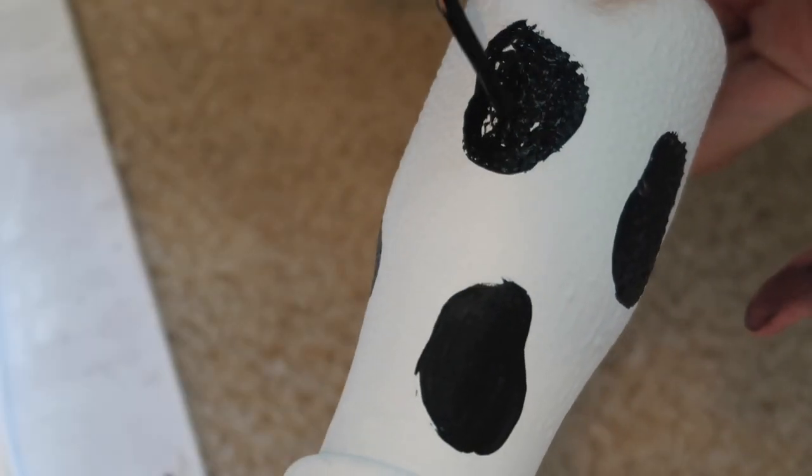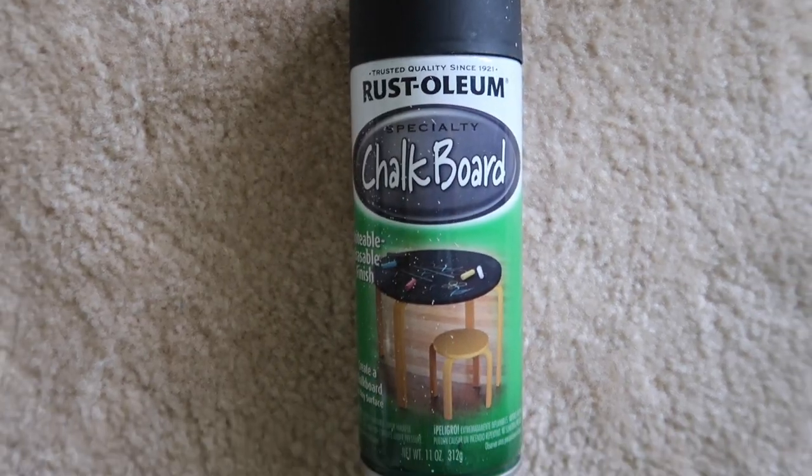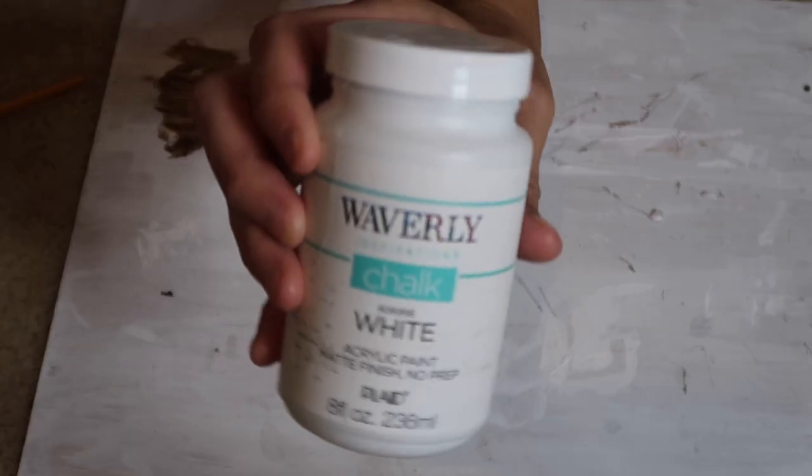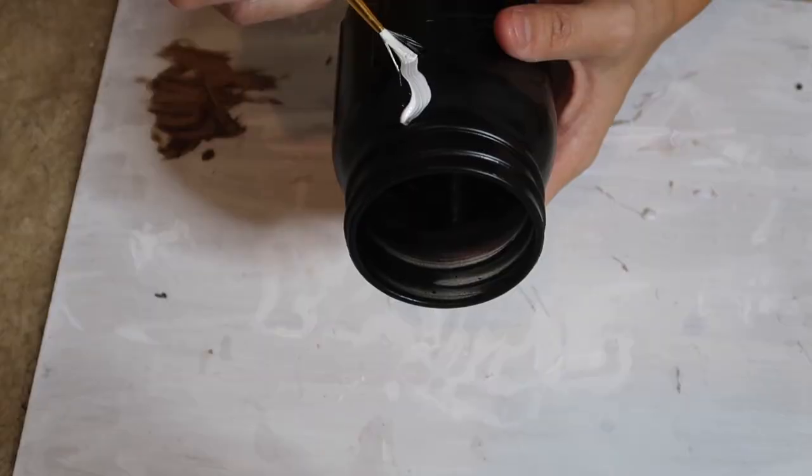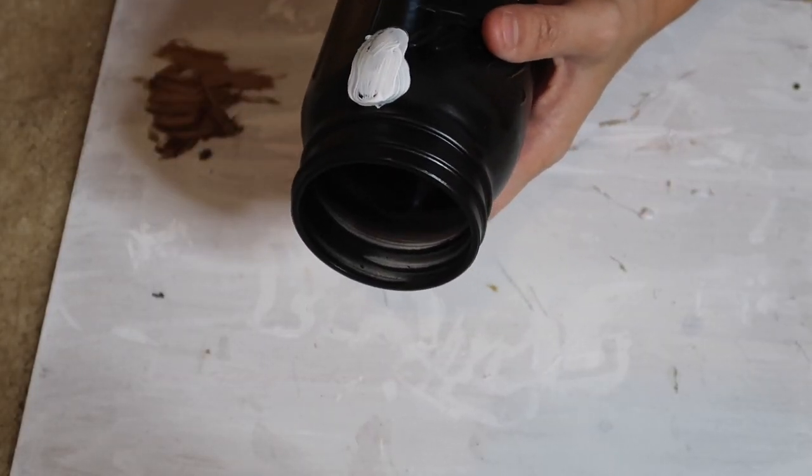Then I'm also going to take a mason jar. I was going to use this chalkboard paint but I ended up just using regular black spray paint because I didn't have any more of this paint left. And then I just spray painted the jar black and I'm just putting little white cow spots on here to mix it up.